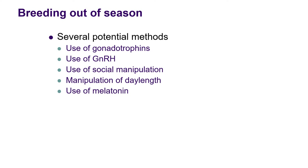There are several potential methods which you could use. The use of gonadotrophins — things like FSH or eCG — which cause trophic building of the gonads. You could use GnRH, which is gonadotrophin-releasing hormone. That is the first hormone in the HPG axis, in that cascade of hormonal regulation which underpins all reproductive activity. So if GnRH is right at the top, manipulation of that would, you would think, cause some incredible effects further down the track in terms of breeding out of season.